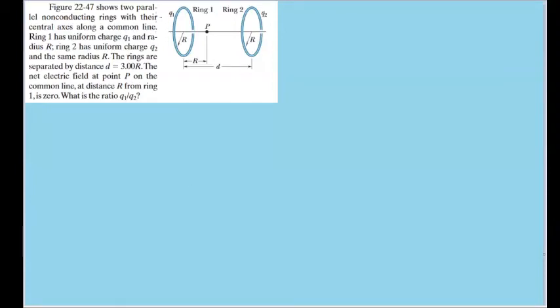This figure shows two parallel non-conducting rings with their central axes along a common line. Ring 1 has a uniform charge q sub 1 and a radius of r, and ring 2 has a uniform charge q sub 2 and the same radius r.